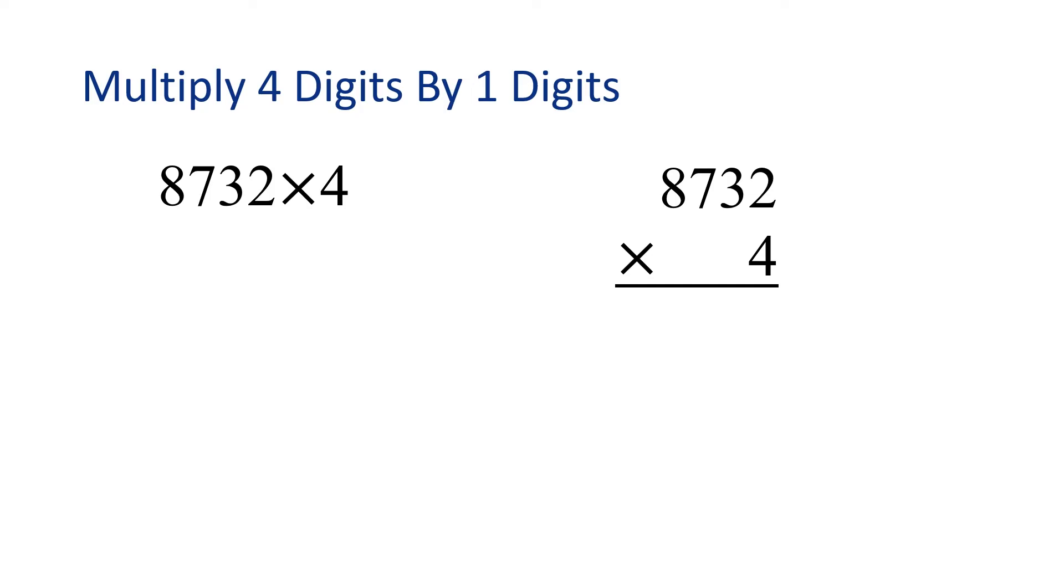Let's multiply 8732 times 4. 4 times 2 is 8. We don't need to carry anything in this step. 4 times 3 is 12. In this case, we will carry the 1. Now multiply 4 times 7 and then add 1. 4 times 7 is 28 plus 1 gives us 29. In this case, we will carry the 2.